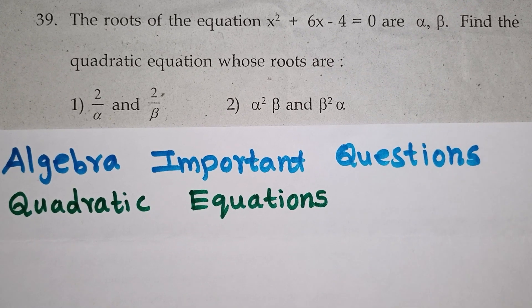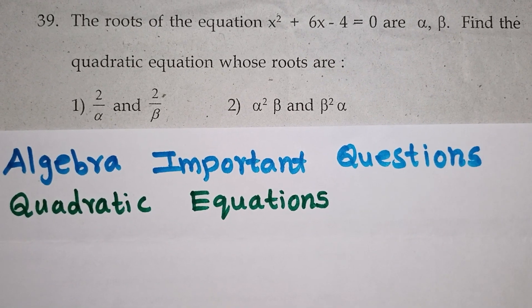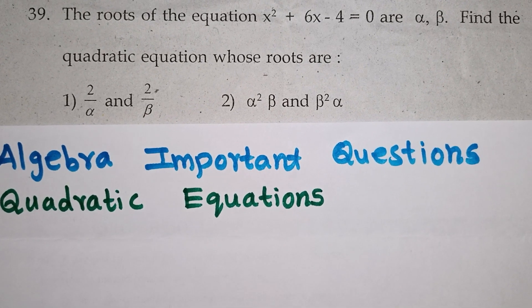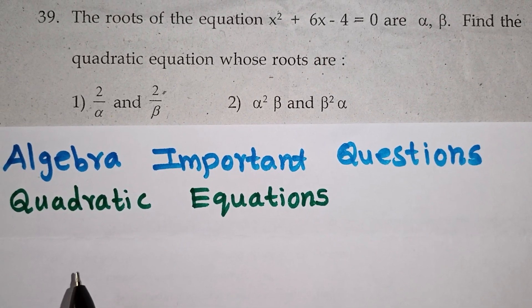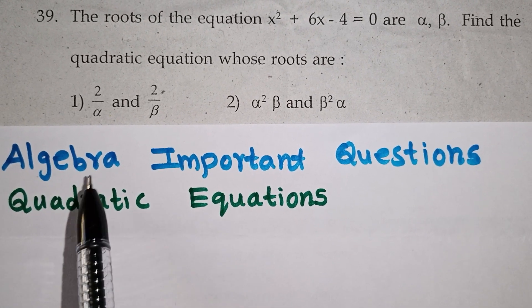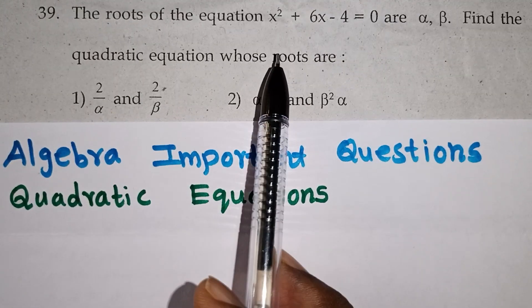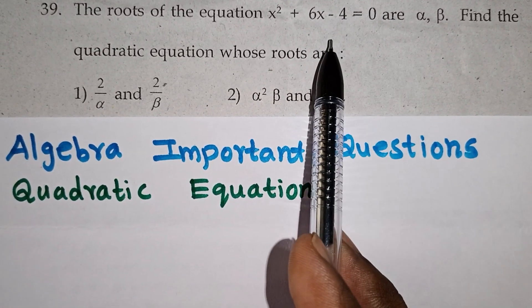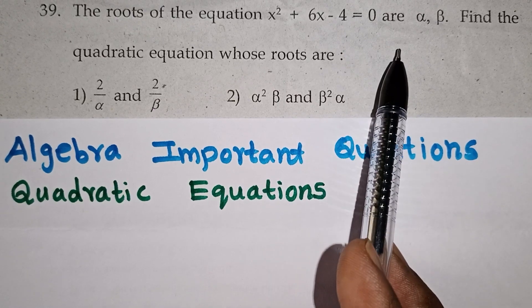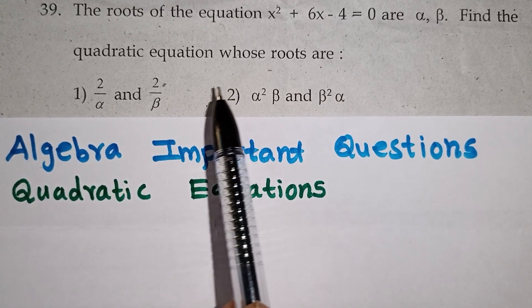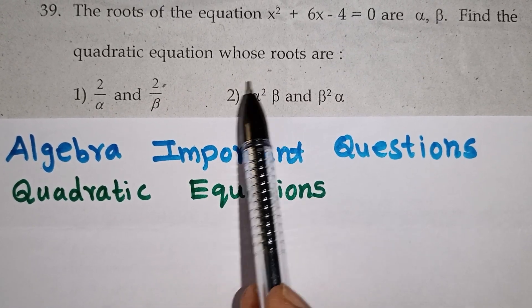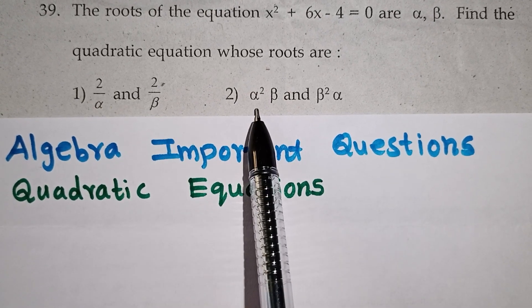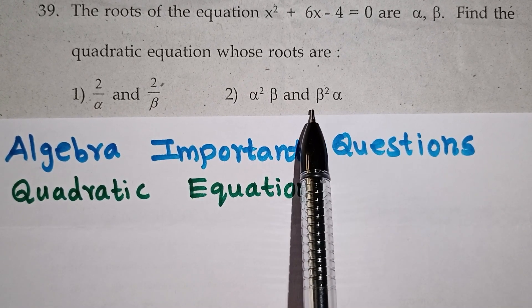Hi students, in this video we will look at 5 more important questions in the Algebra chapter on Quadratic Equations. The roots of the equation x² + 6x - 4 = 0 are alpha and beta. Find a quadratic equation whose roots are (2/alpha and 2/beta) and (alpha²·beta and beta²·alpha). There are 2 questions.